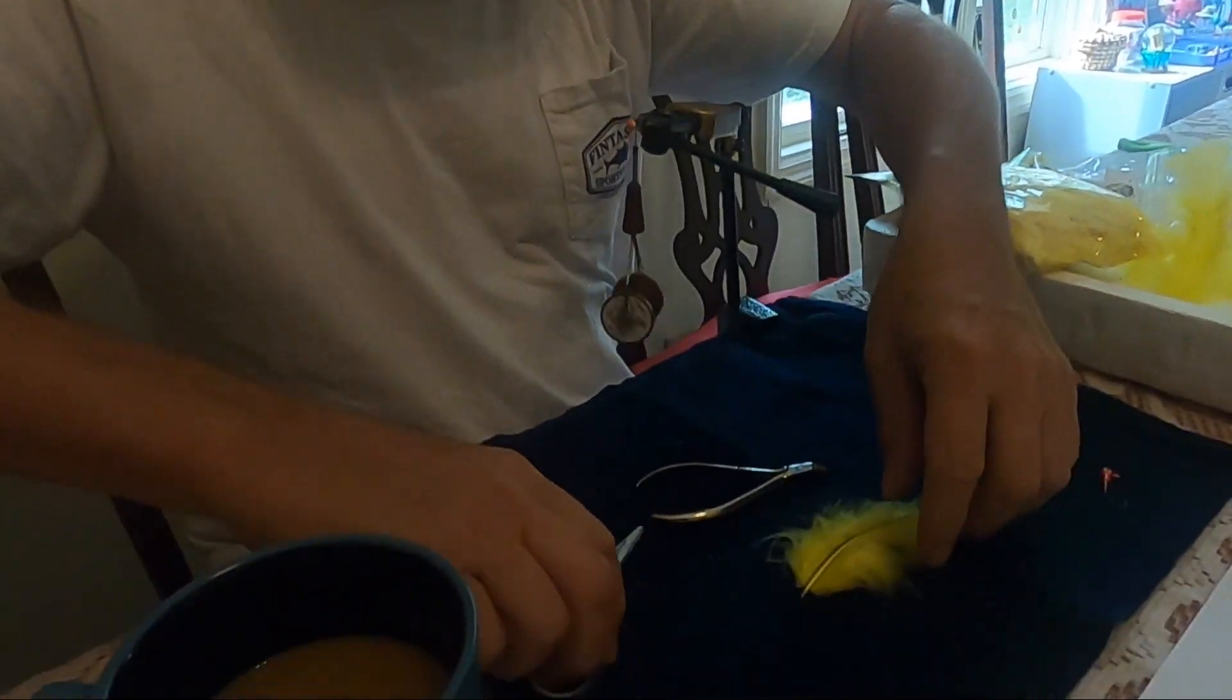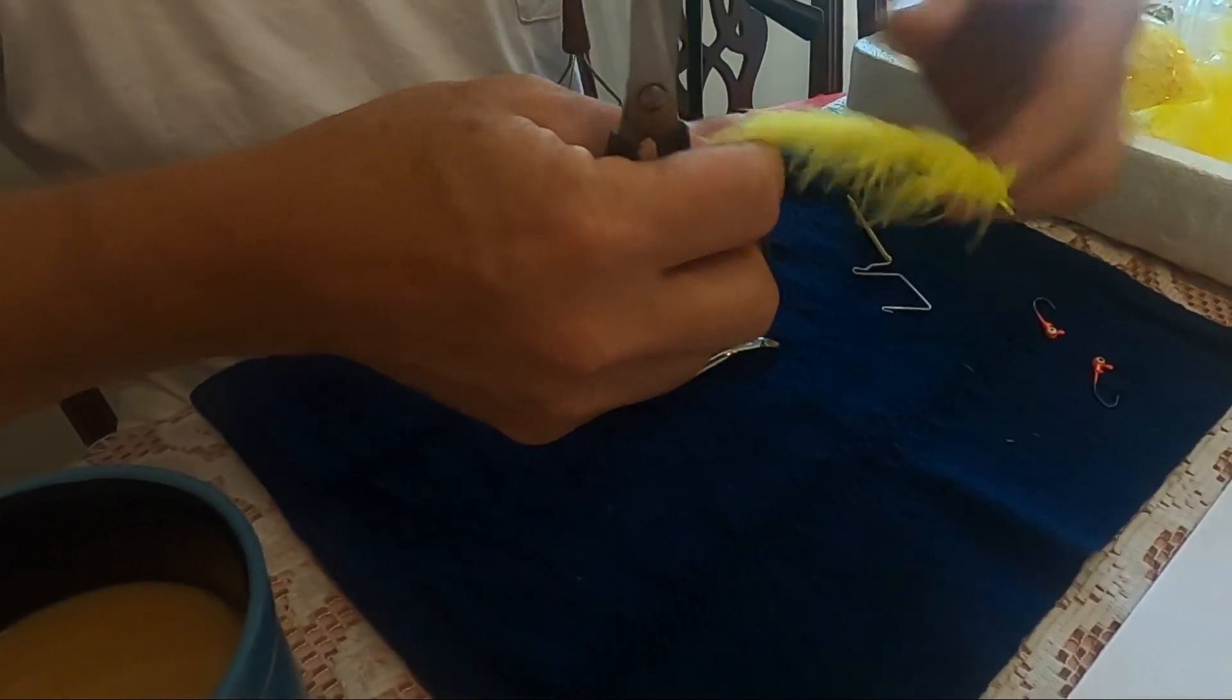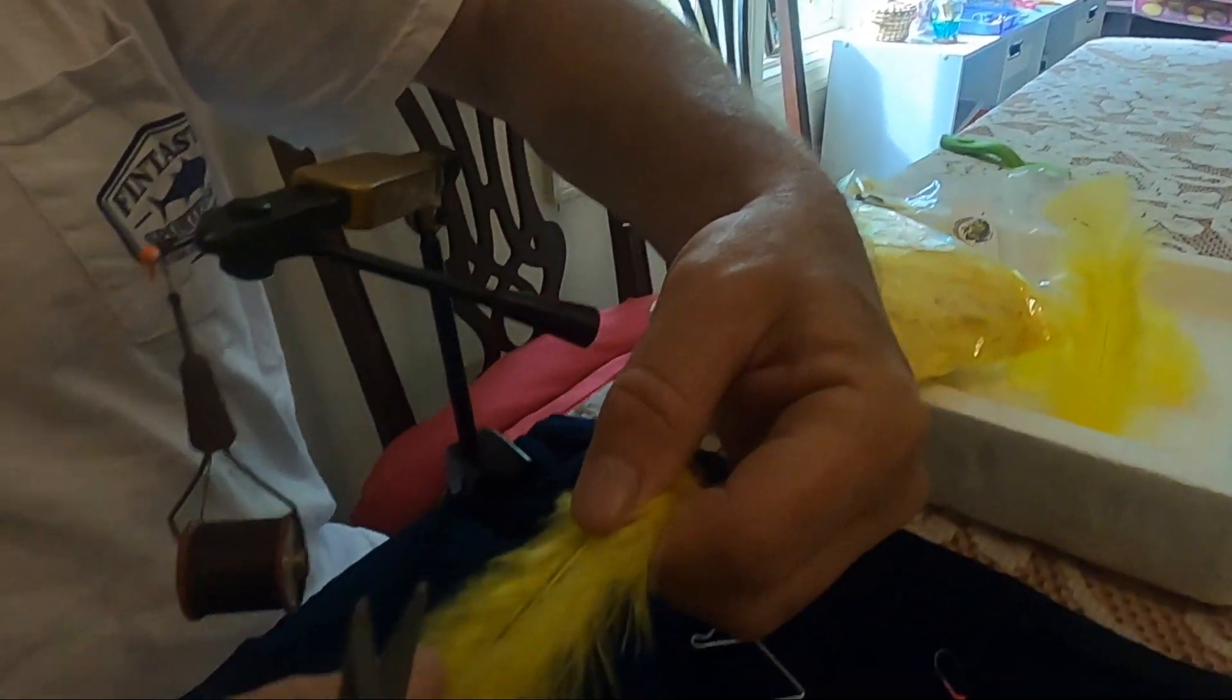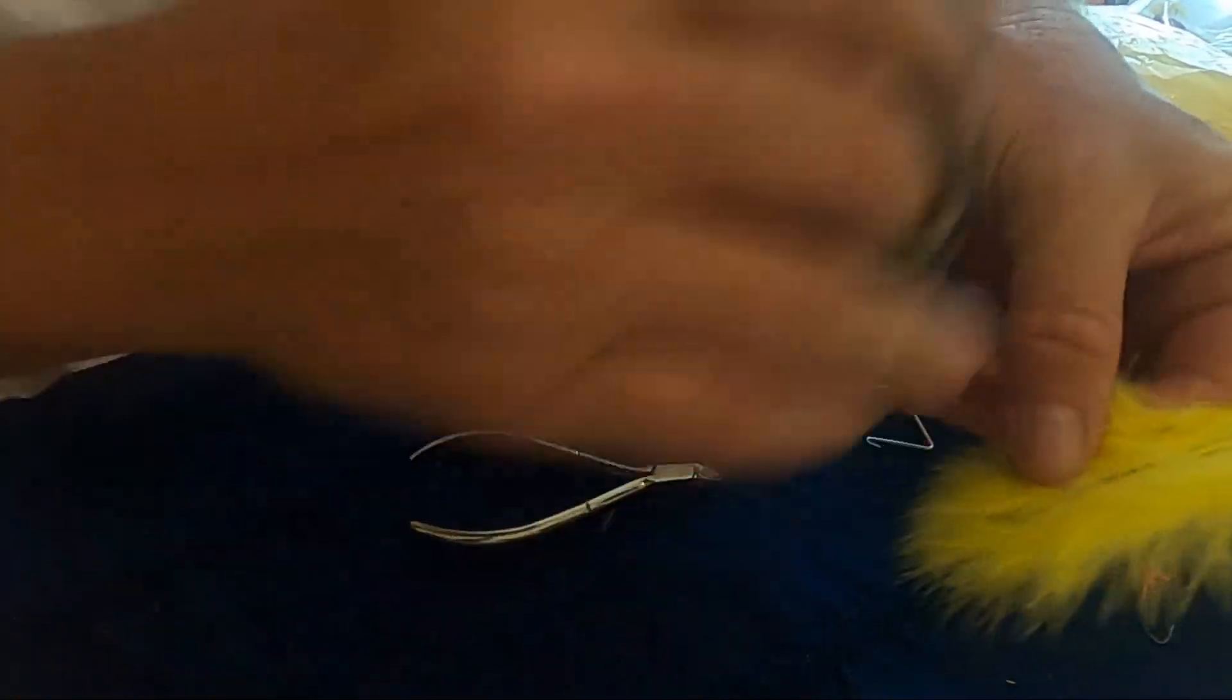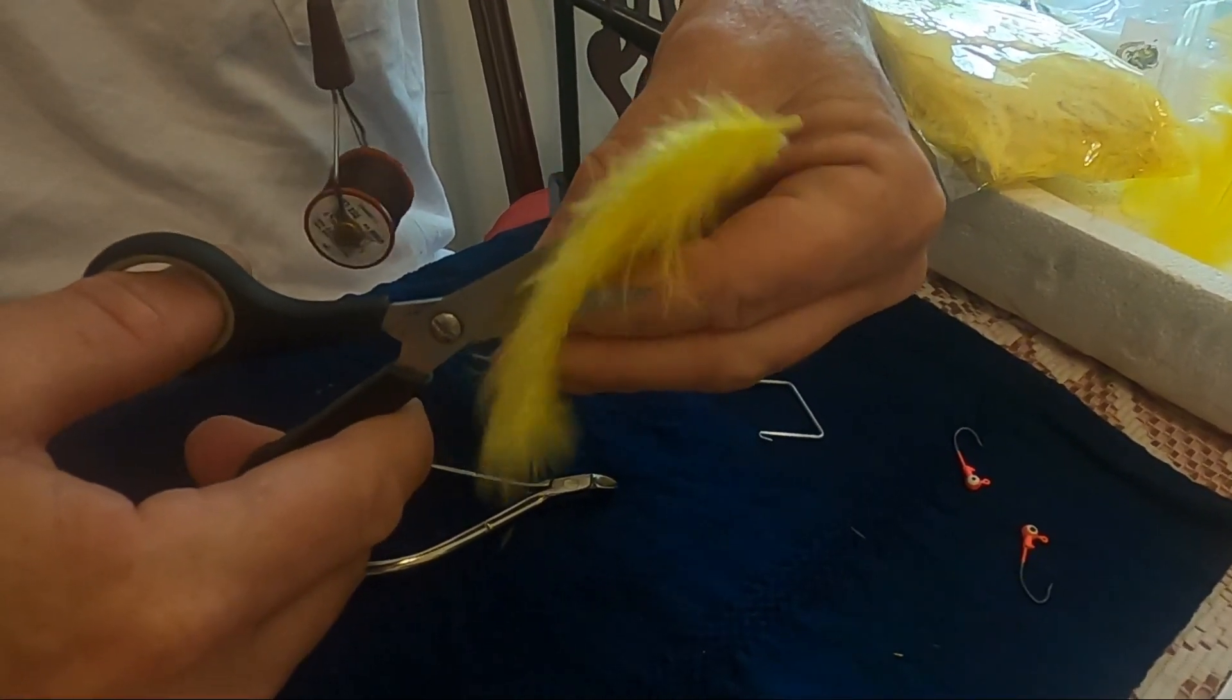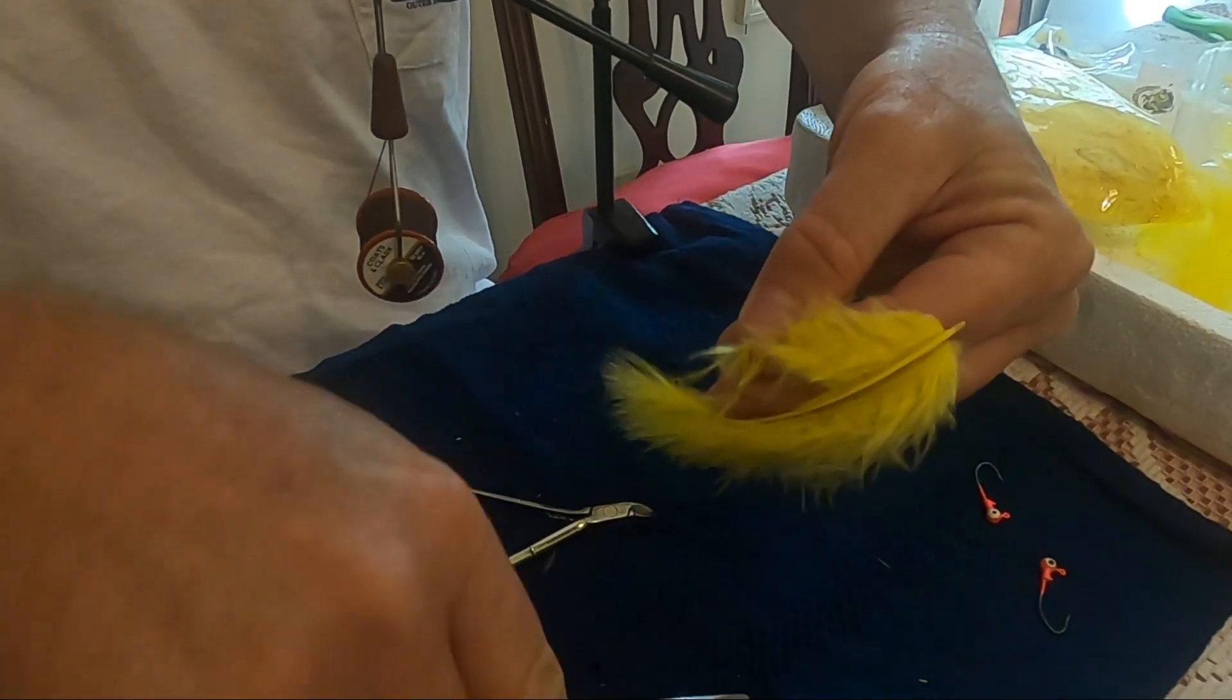For example here, we're going to be using like from here to here. I want to cut - you can cut either way. I like cutting from here towards the quill, towards the body, and the reason is that's just a natural layer of how it lays down. So cutting up against that, I'm going to pinch a couple inches.